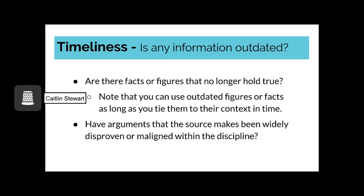You also need to consider whether or not any information in the source is outdated. Ask yourself: are there any facts or figures that no longer hold true? Realize that you can use outdated figures or facts as long as you tie them to their context and time. For example, it would be perfectly appropriate to say: in 1900, the population of the city of Seattle was X number of people according to the decennial population census. Where this gets tricky is figuring out what information remains true and what is outdated.